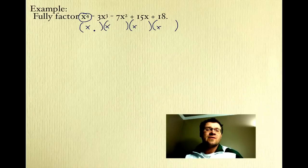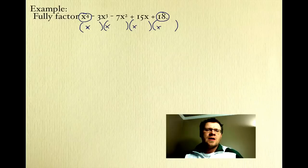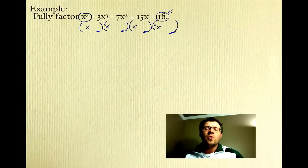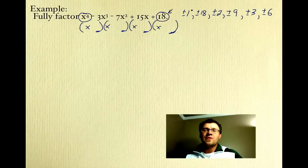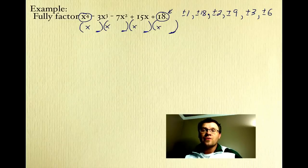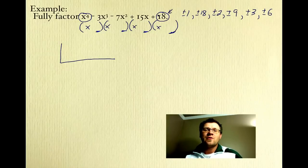We need to perform synthetic division to find these factors. Take note of the constant term 18: if all four x's multiply together to give x to the fourth, then all of the constants multiply together to give 18. So the numbers to try are all factors of 18: positive and negative 1, positive and negative 18, positive and negative 2, positive and negative 9, positive and negative 3, and positive and negative 6. It's intelligent guess and check, because they must multiply together to get 18.